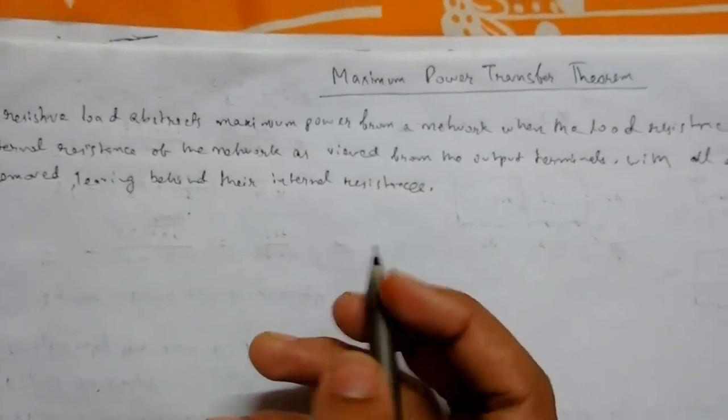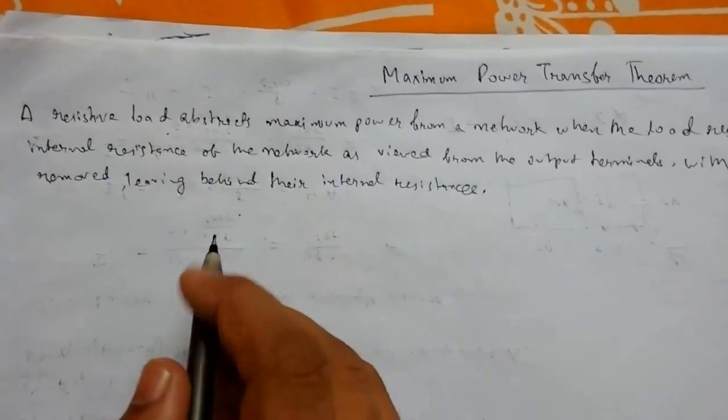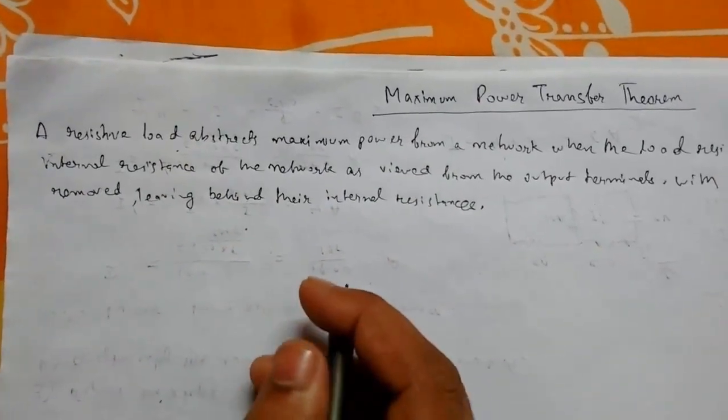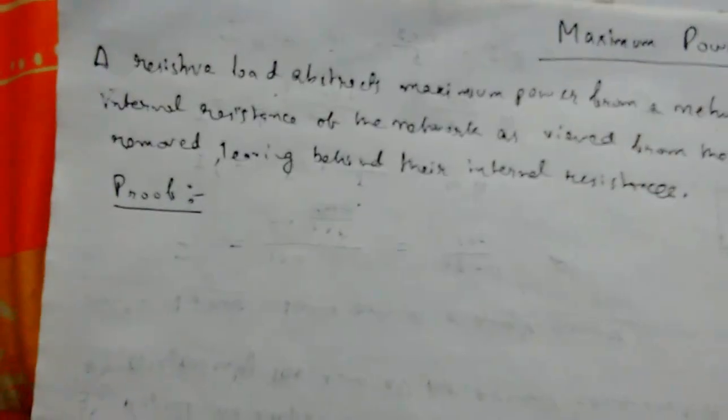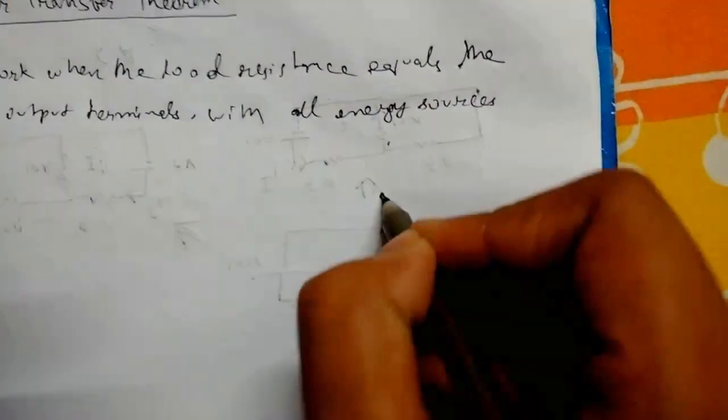maximum power when the load resistance equals the internal resistance of the circuit. Then the power drawn from the circuit will be maximum. So to see the proof of the theorem, let me draw a circuit